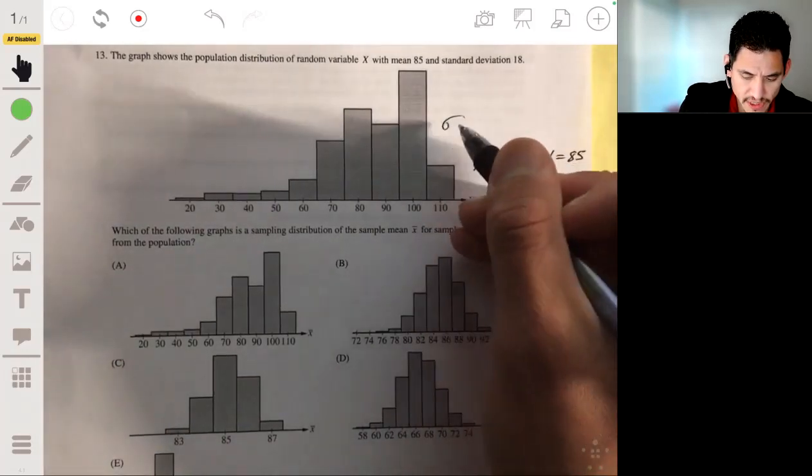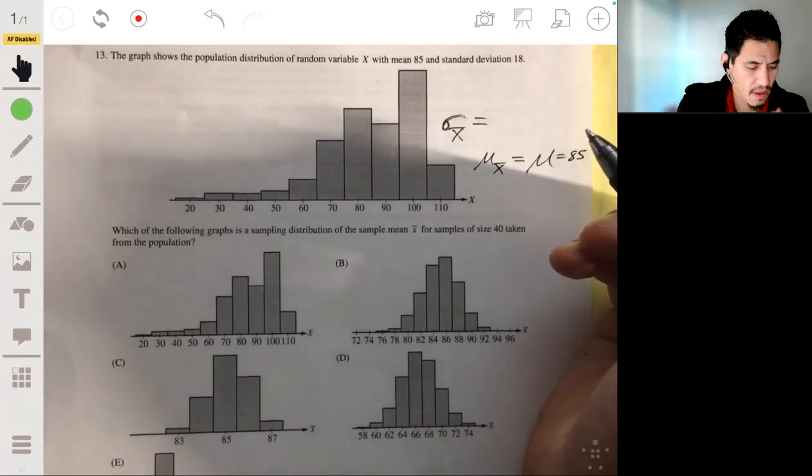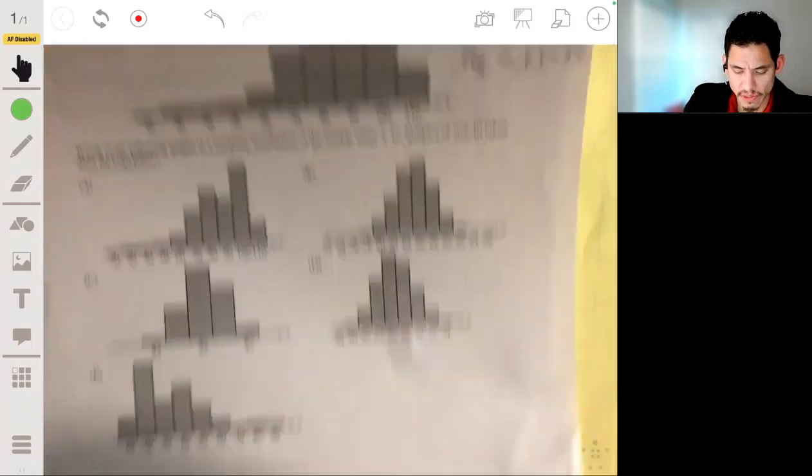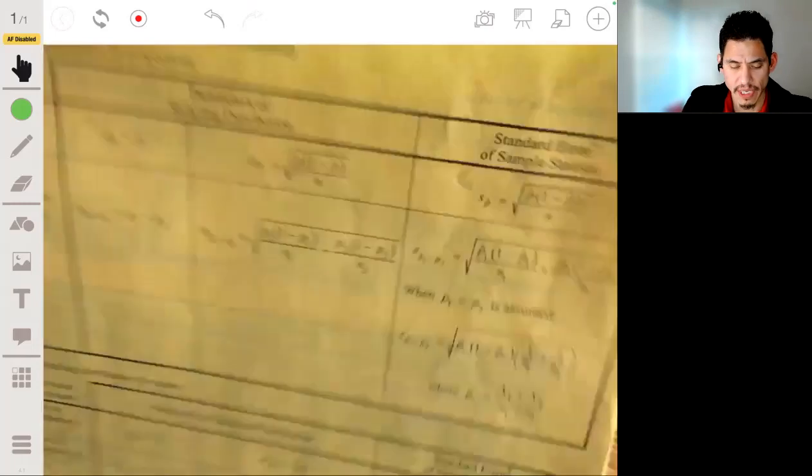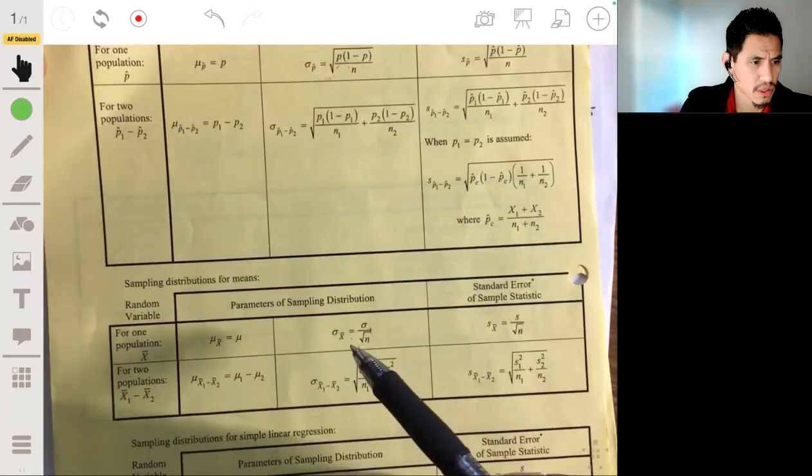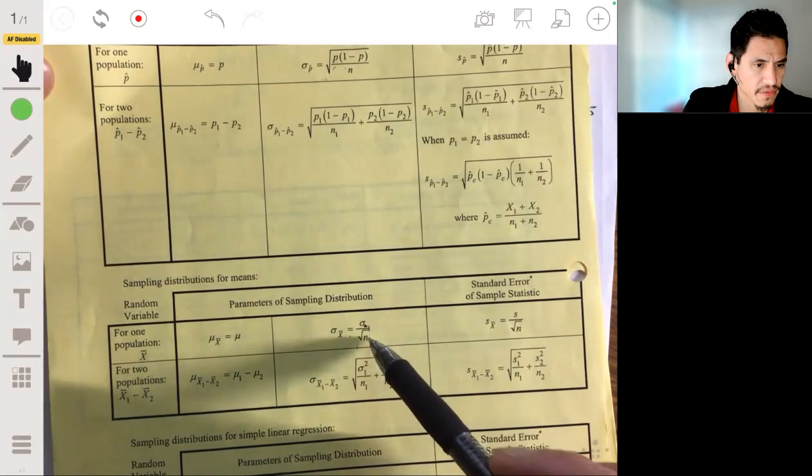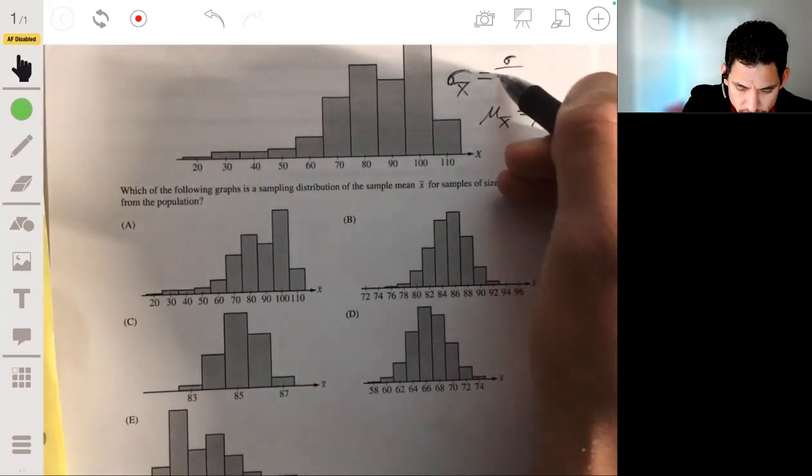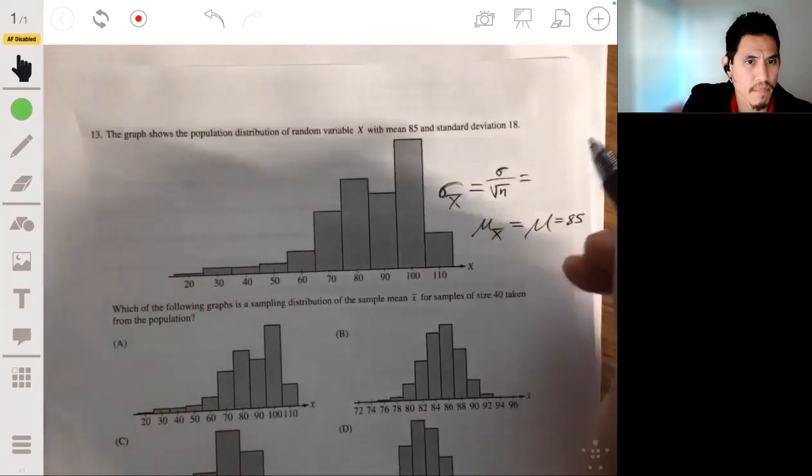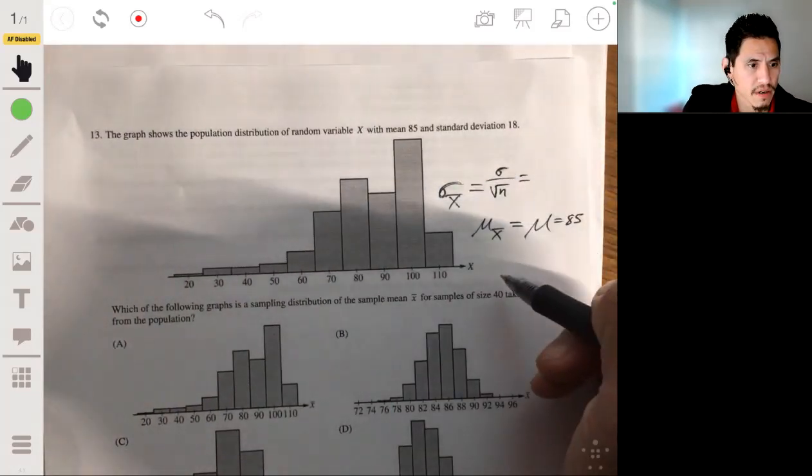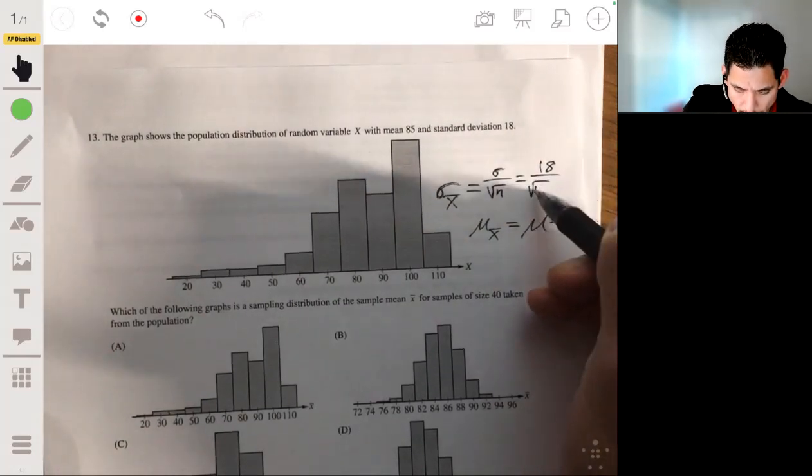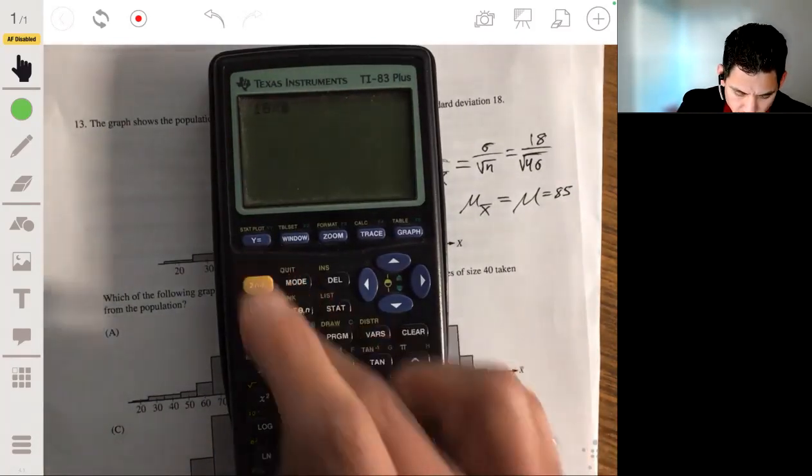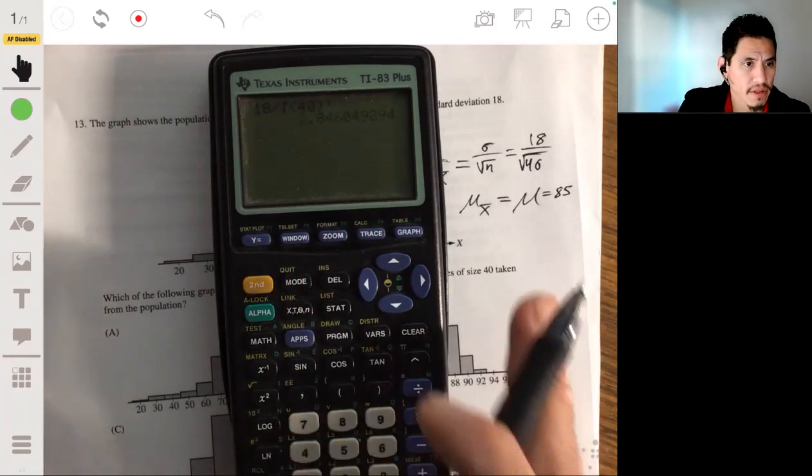And then we have to find the standard deviation of the sampling distribution of x bar. Now that's going to be equal to, let's look at our formula sheet, which will come in handy. So we will look at the, we will take the population standard deviation divided by the sample size, divided by the square root of the sample size. So in this case, it will be 18 divided by the square root of 40. So 18 divided by the square root of 40, about 2.85.